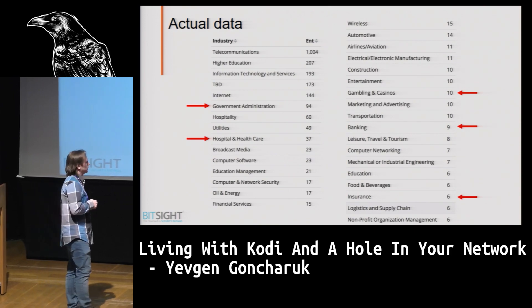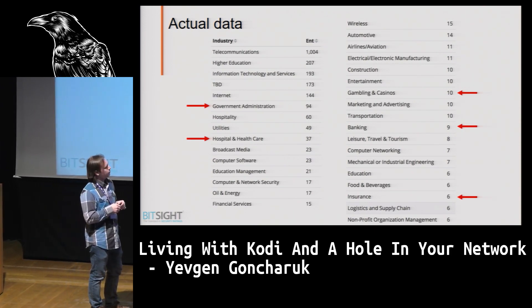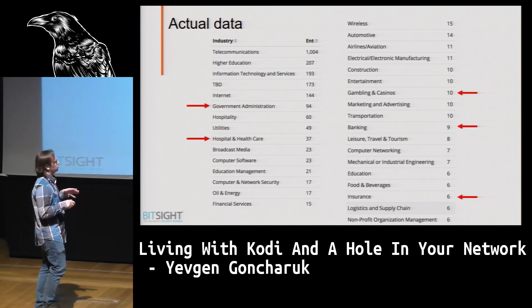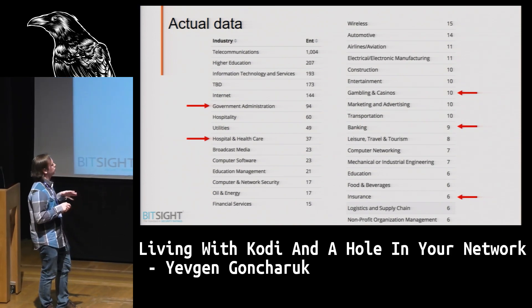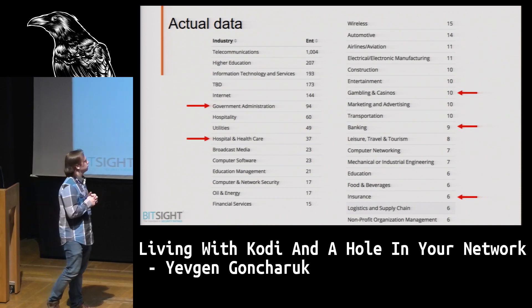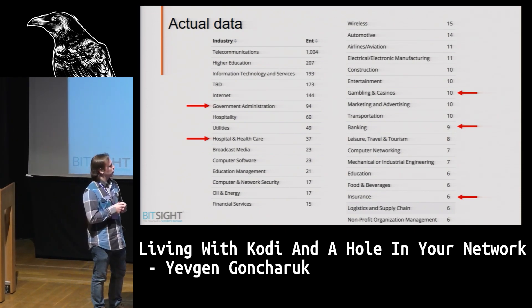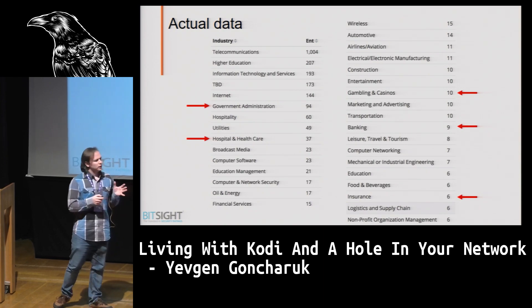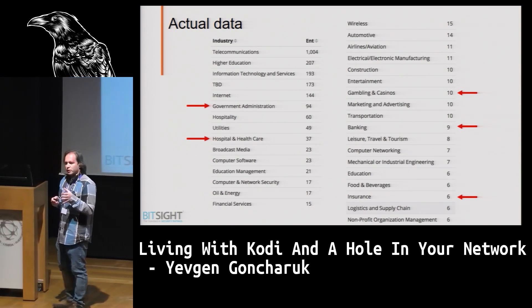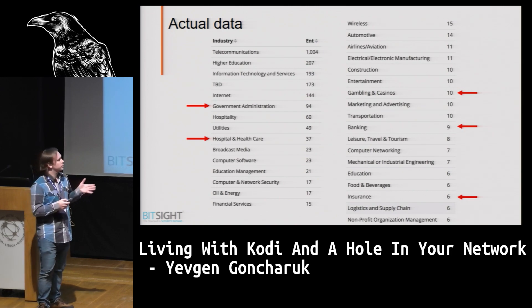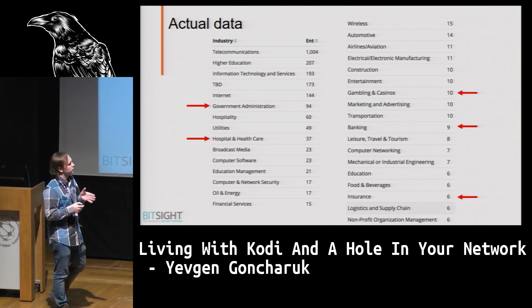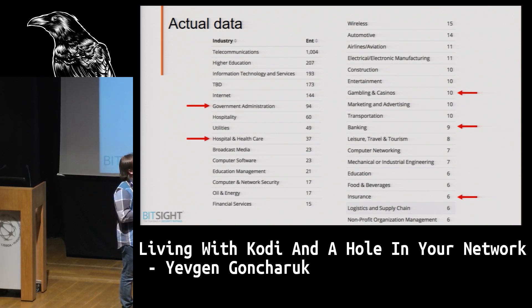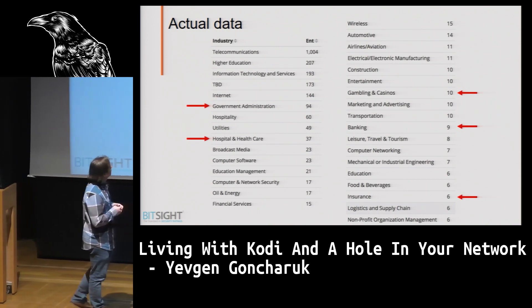So what could this mean? This means we have access to some device on the network of some random bank, random casino, random government administration entity. The thing is, this is not much — it's just a Kodi, just a simple device running some code. Someone just wanted to watch some movies at some company. But well, that company might be an interesting one.